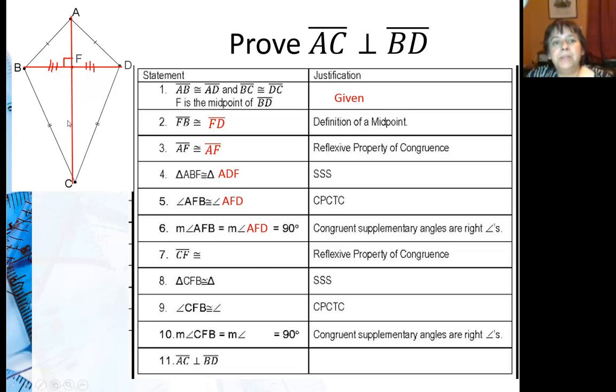Now I'm going to look at this other segment, CF. CF is congruent to CF by the reflexive property. Now, technically I don't know that this is going to be going through F and hitting C, but let's find out. I also know that triangle CFB is going to be congruent to triangle CFD. Why? Well, I have this is congruent to that, this is congruent to that, and this is congruent to itself by the reflexive property. So these two triangles are congruent by side, side, side.